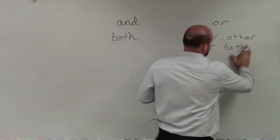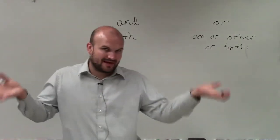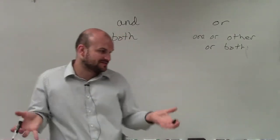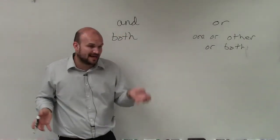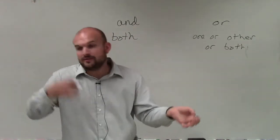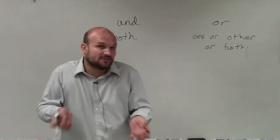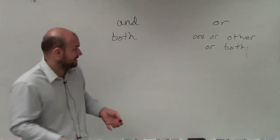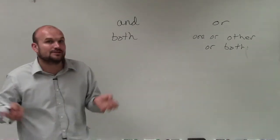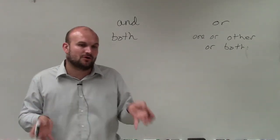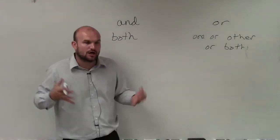When we're dealing with compound inequalities, we have two inequalities. One inequality can be true, the other inequality can be true, or both of them can be true at those values. Whereas with an and inequality, the graph is only going to be where both of the inequalities are true.